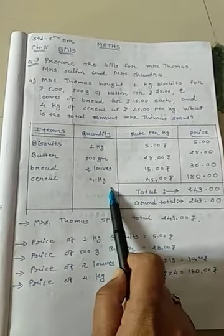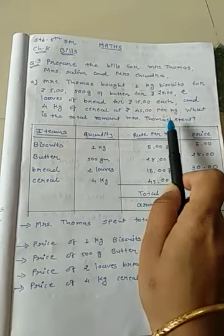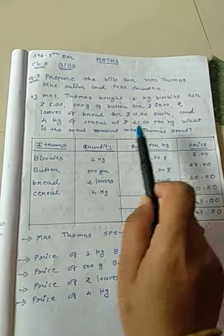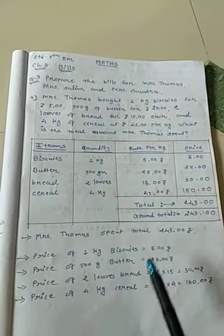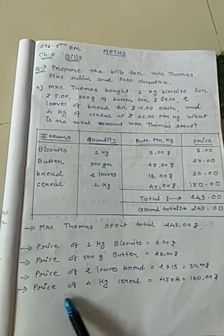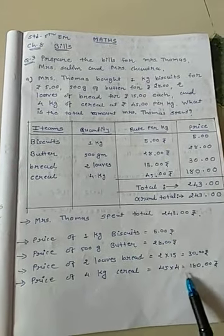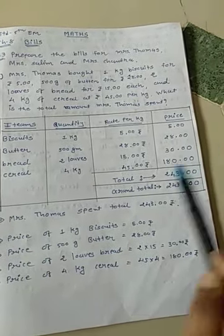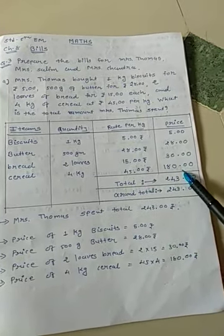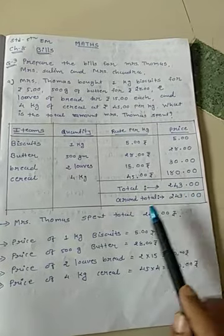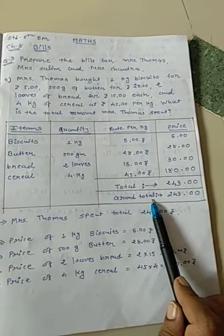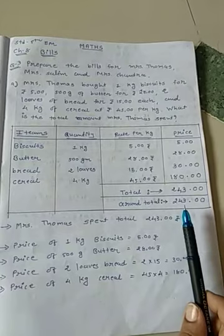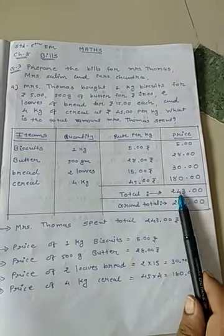And lastly, cereal. She purchased 4 kg and Rs. 45 is the cost of 1 kg. Here it is clearly mentioned Rs. 45 per kg cereal cost. So we have to multiply 45 with 4 to get the total cost of cereal. Price of 4 kg cereal equals Rs. 45 into 4, that is Rs. 180. Now we have individual prices, and the total price equals Rs. 243.00. Grand total is also Rs. 243.00 because sales tax is not given — if sales tax is given, we add the tax to find the grand total.